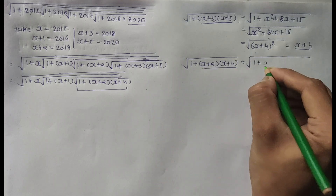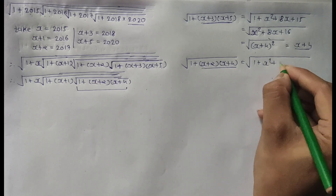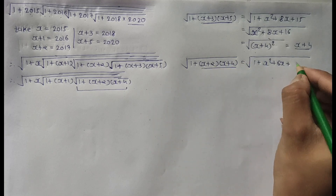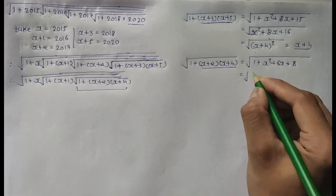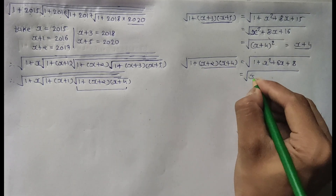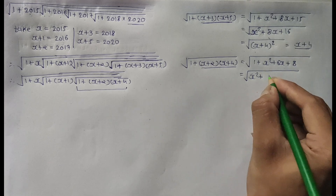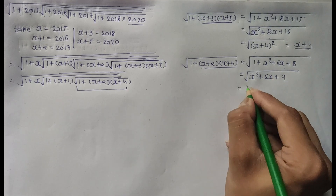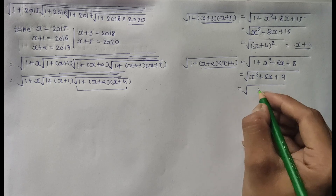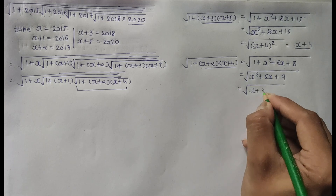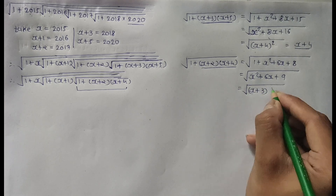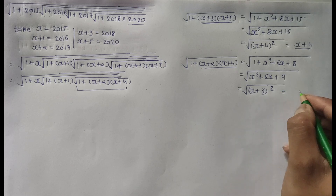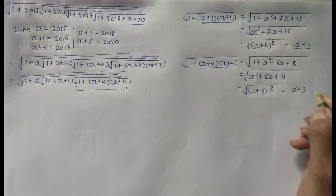Inside square root of 1 plus (x+2) times (x+4) equals square root of 1 plus x squared plus 6x plus 8, which equals square root of x squared plus 6x plus 9. Again, this equals (x+3) squared. Square and square root cancel, equal to x plus 3.